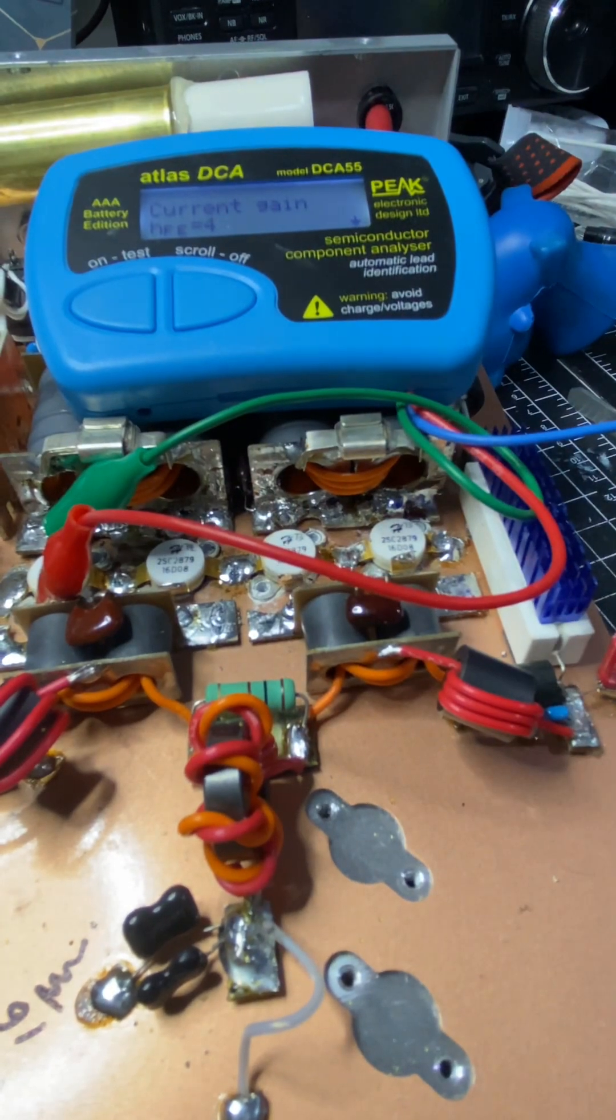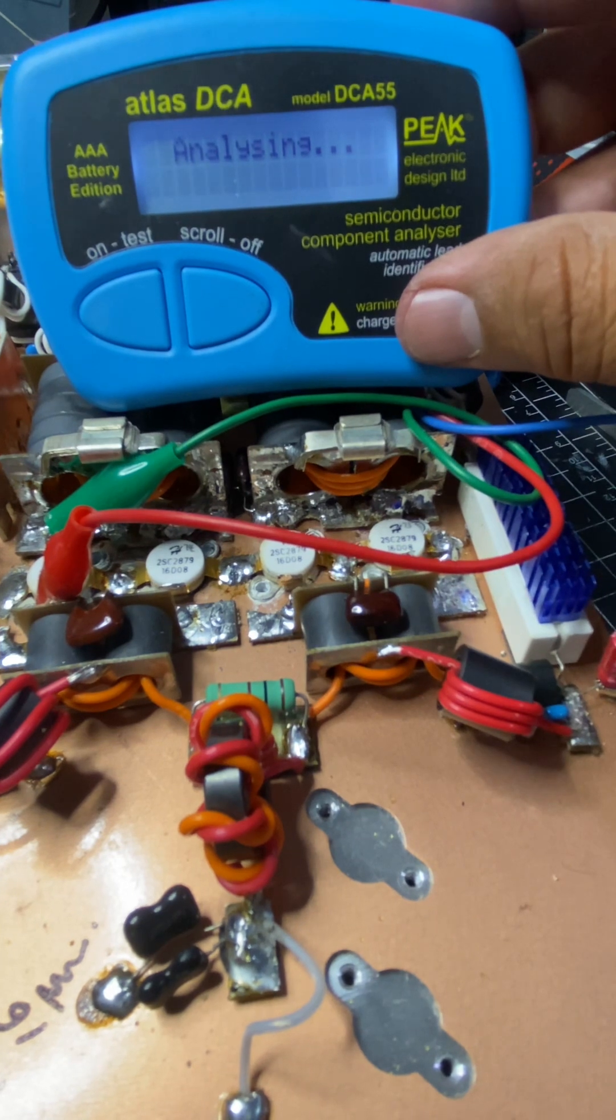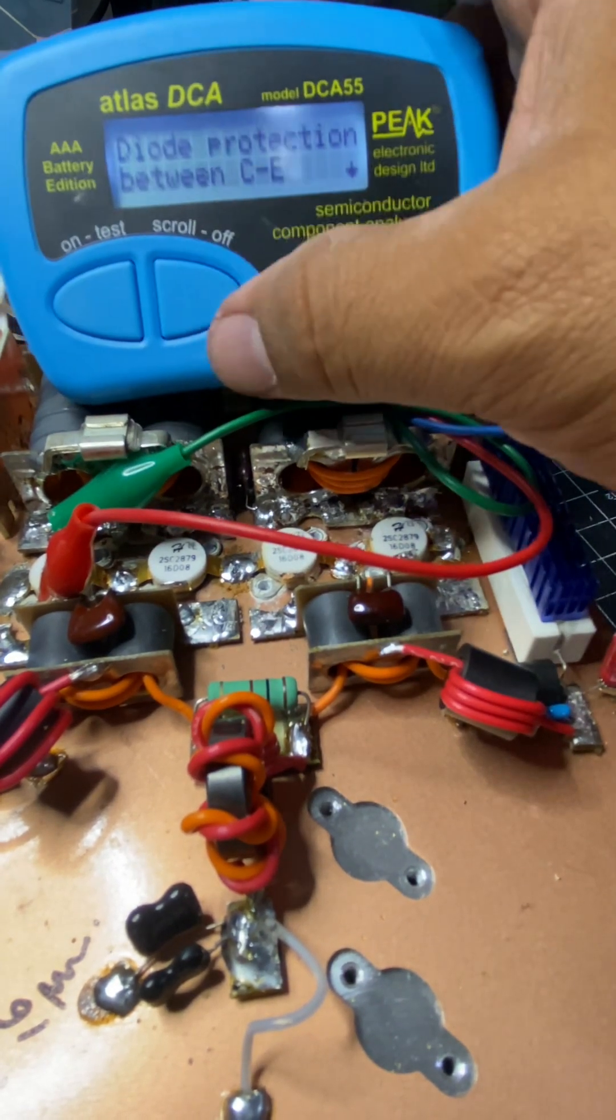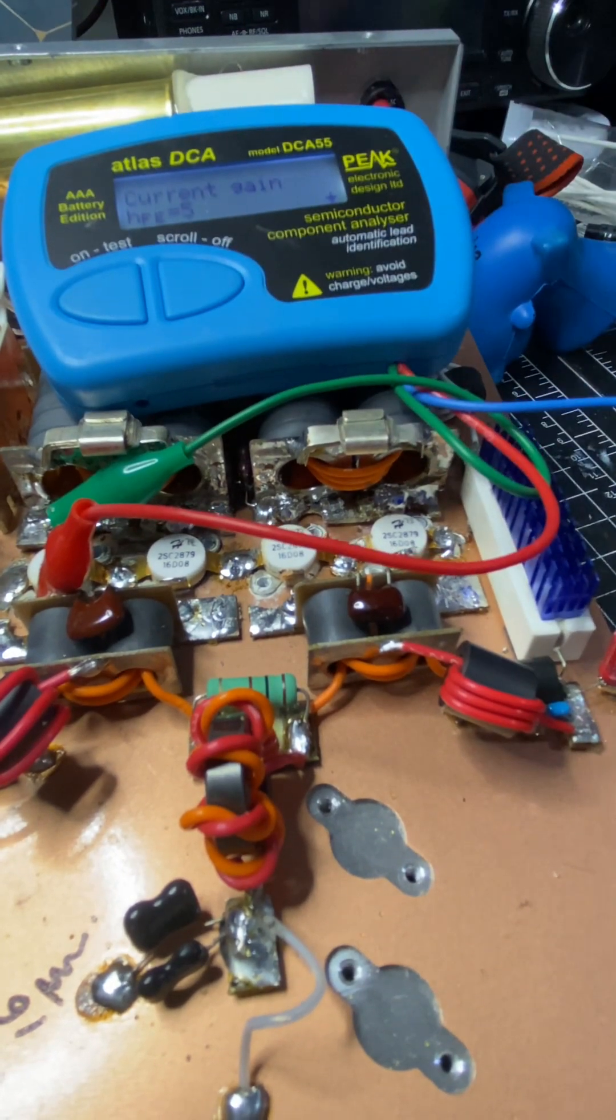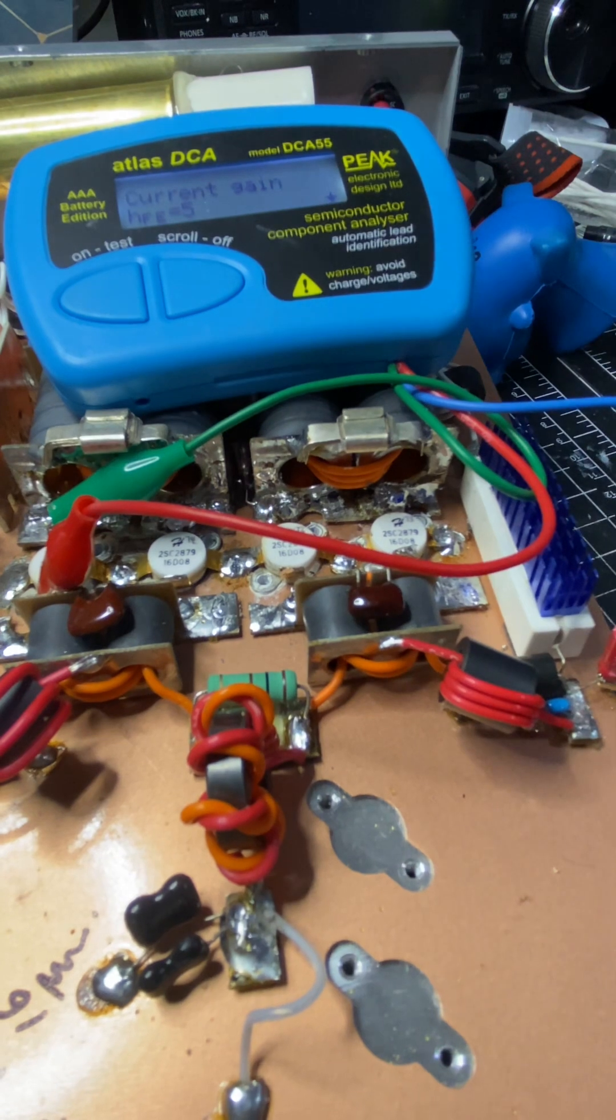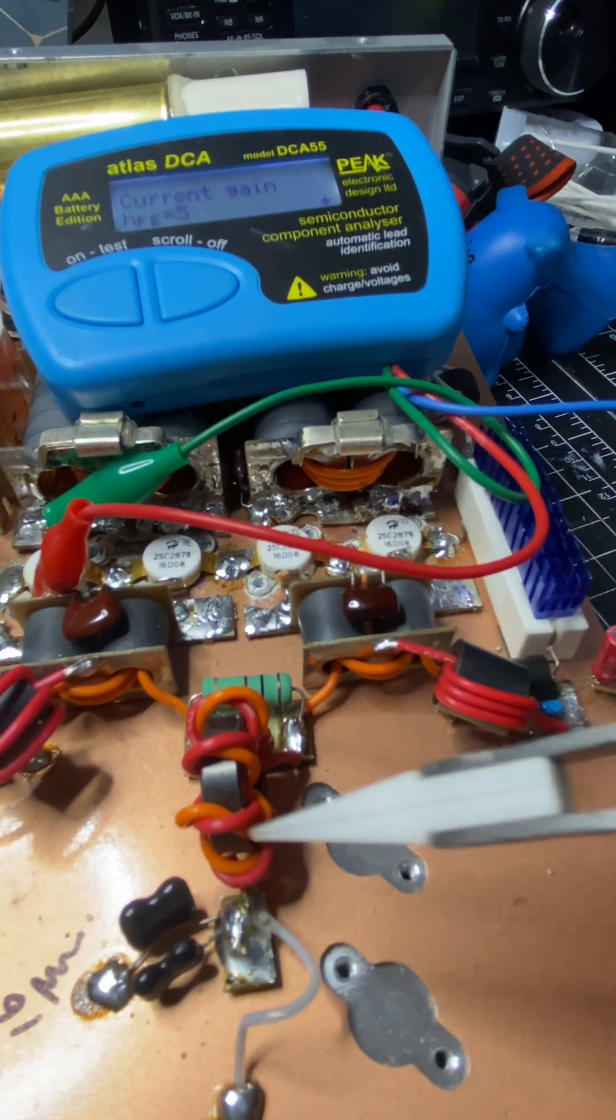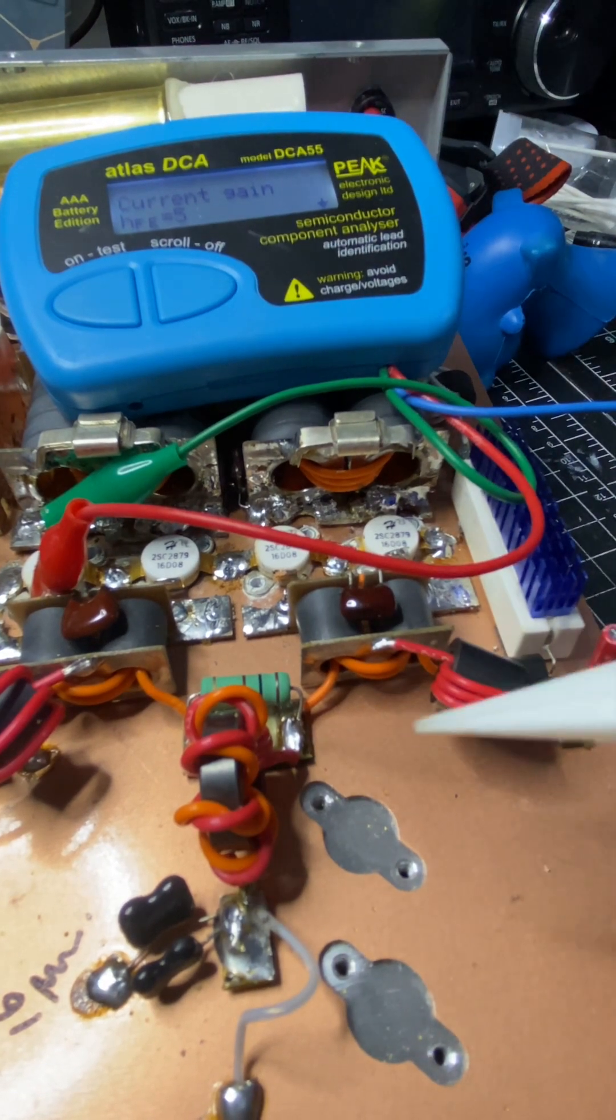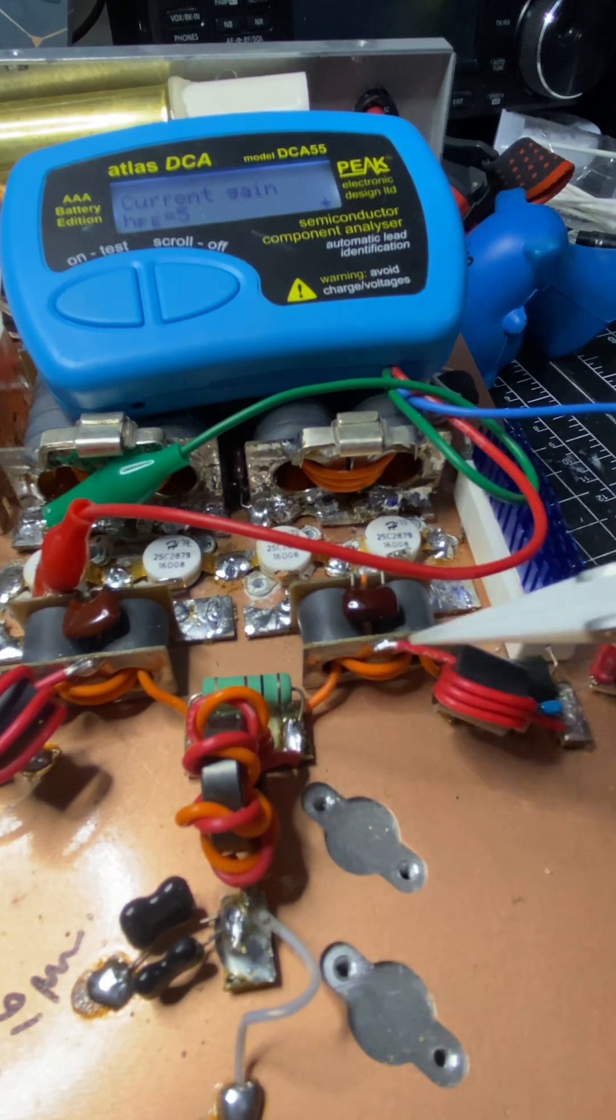We're gonna test this one. This one has five. So this is telling me that my LC network, my input splitter, my output combiner... Remember guys, the one in front is the splitter because it splits the power.